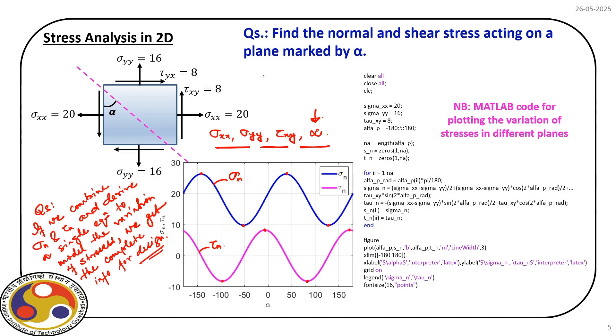In the meantime, the task I suggest: for different values of alpha, use the expressions to find sigma_n and tau_n acting on the plane defined by that angle. Make sure you verify the values provided. With that, let us close here and we will continue in our next class. Thank you very much.